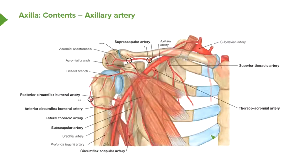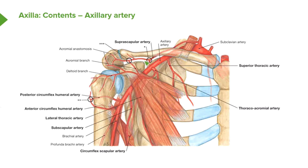Here we can clearly see the cervico-axillary canal. We can see anteriorly we have the clavicle, medially we have the first rib, and posteriorly we have the superior border of the scapula. So here is the posterior boundary, here is the anterior boundary, and here is the medial boundary. This forms the apex of the axilla.